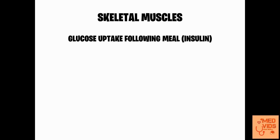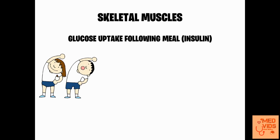In skeletal muscles, when we consume a meal, glucose is taken up by the skeletal muscles with the help of insulin and stored as glycogen. During exercise, the fuel for skeletal muscles is mainly supplied by fatty acids. During starvation, the main source of energy for skeletal muscle comes from ketone bodies, though fatty acids can also supply energy. Additionally, skeletal muscles release an amino acid called alanine into the circulation.